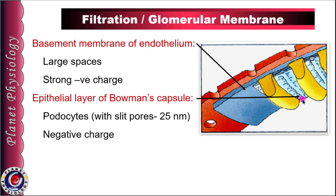The last layer of the barrier is the epithelial cells of Bowman's capsule, i.e. podocytes. As studied in the introductory video of the renal system, podocytes have finger-like projections which wrap around the capillaries, and the gaps between them form slit pores. The slit pores also possess negative charge.